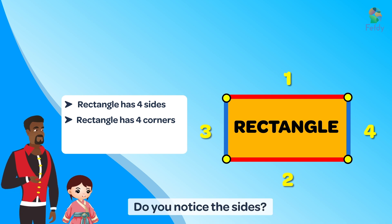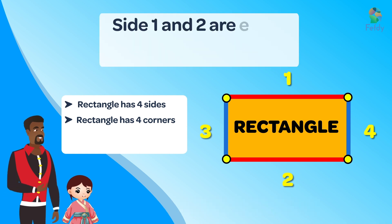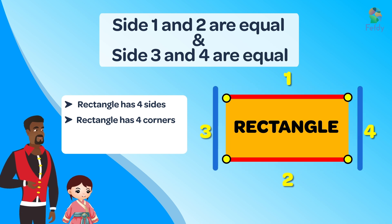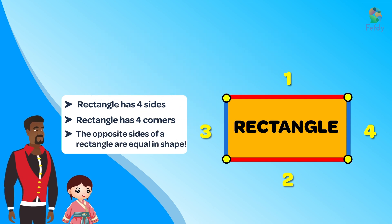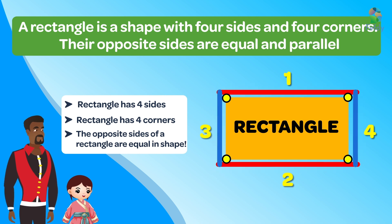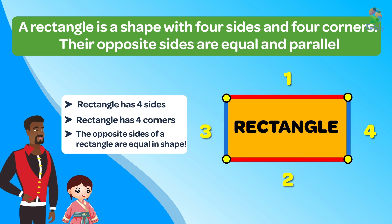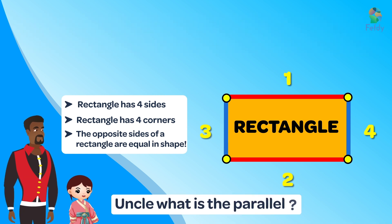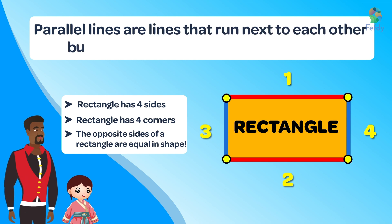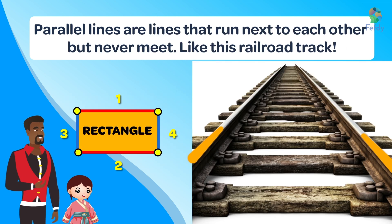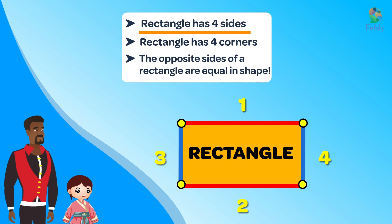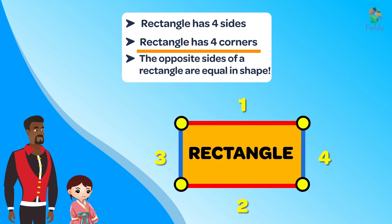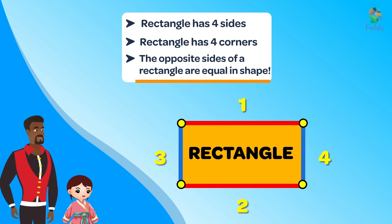Do you notice the sides? Yes, Uncle. The opposite sides are equal. Side one and two are equal, and side three and four are equal. The opposite sides of a rectangle are equal. A rectangle is a shape with four sides and four corners, and their opposite sides are equal and parallel. Uncle, what is parallel? Parallel lines are lines that run next to each other but never meet — like this railroad track. A rectangle has four sides and four corners, and the opposite sides of a rectangle are equal.